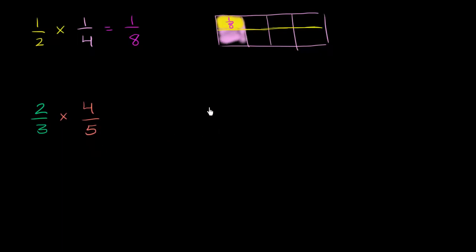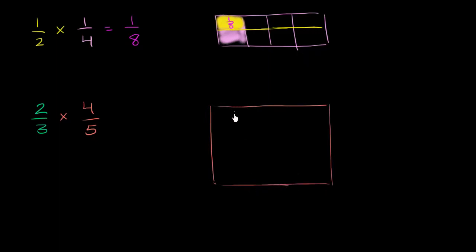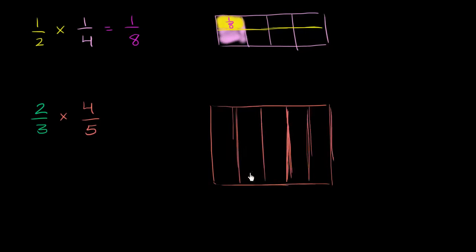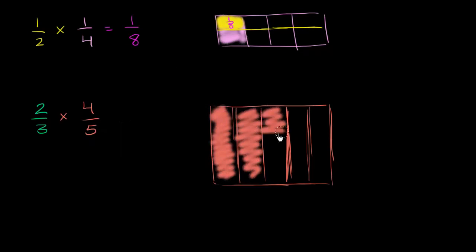Let's think about this. Let's represent 4 fifths. If I have a whole like this, let me divide it into five equal sections. I'm trying my best to make them look like equal sections. We want four fifths — four of these five equal sections. So that right over there is 4 fifths.